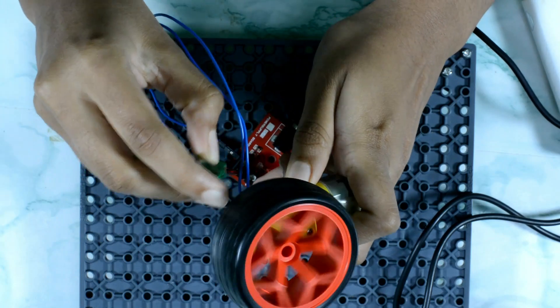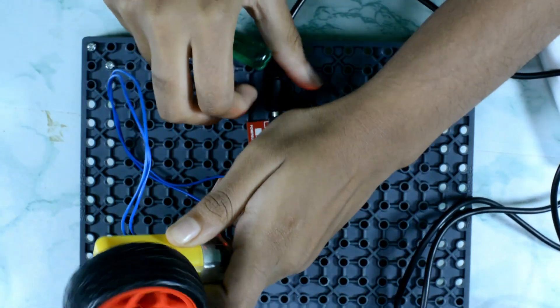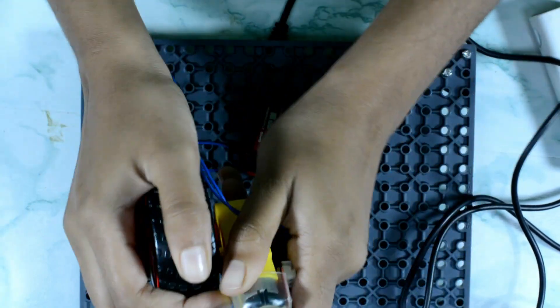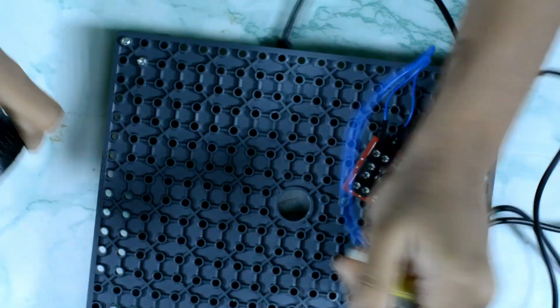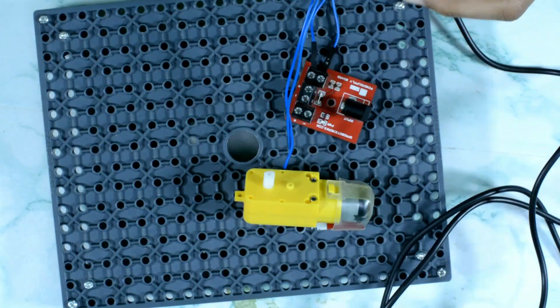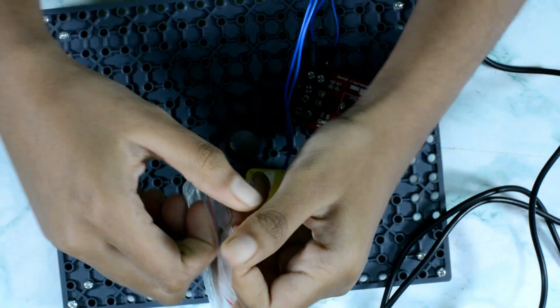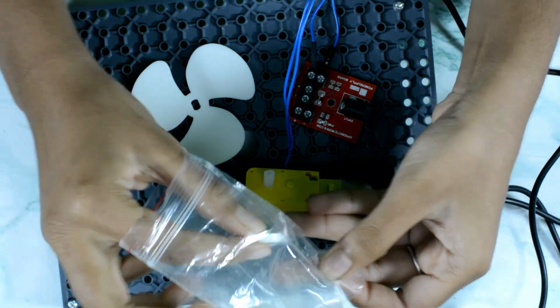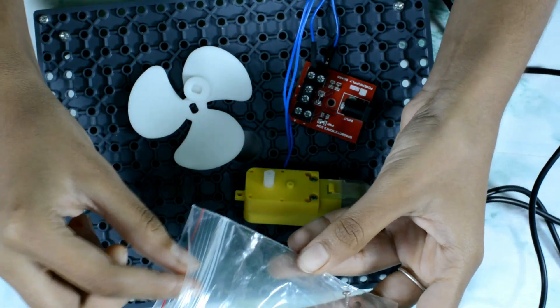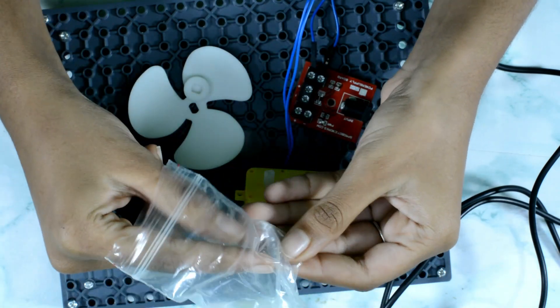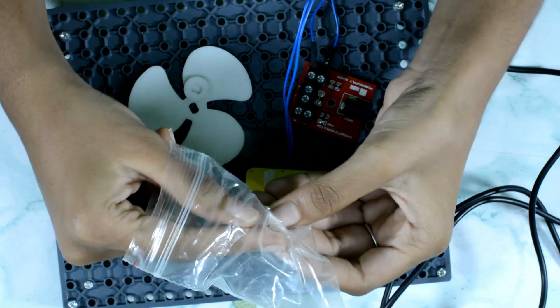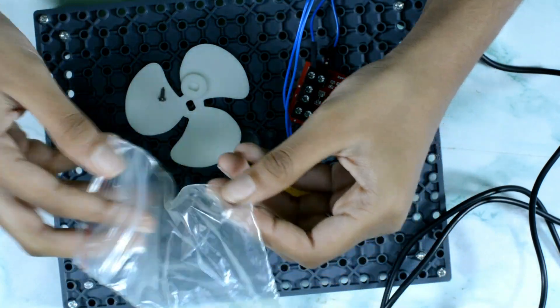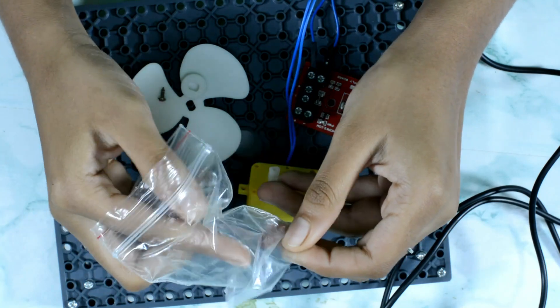Now let's try the same with the fan set. Let's take the fan set. Now what is inside this fan set? It basically has a fan, an acrylic washer, and then a screw to fix the fan to the shaft, and then we have a fiber washer.